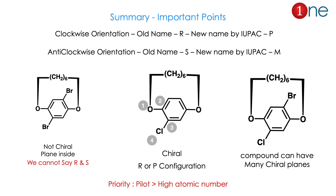To summarize the key points: clockwise orientation means R in old nomenclature and P in new nomenclature; anticlockwise means S (old) or M (new). Always check chirality first — only if the compound is chiral should you proceed to find R and S. If it is chiral, find the pilot atom first, then assign highest priority to the pilot atom's adjacent atom, number continuously, and determine P or M. Remember: the pilot atom's neighbor always gets highest priority, not the atomic number.